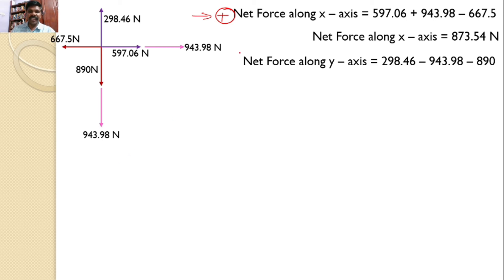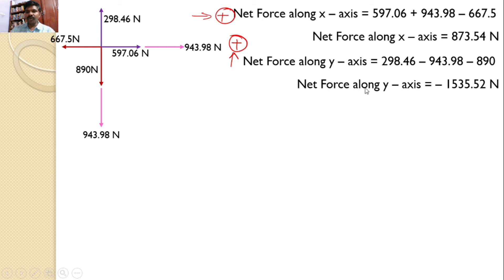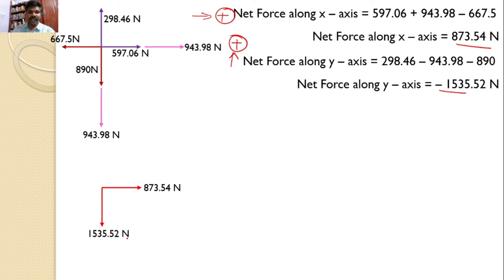Similarly, for the net force along the Y axis, taking upward as positive: 943.98 Newtons acts downwards, 819 Newtons acts downwards, and 298.46 Newtons acts upwards. Hence, the net force along the Y axis equals 298.46 − 943.98 − 890, giving −1535.52 Newtons. The negative sign means the net force is acting in the downward direction. So the net force is 873.54 Newtons to the right and 1535.52 Newtons downward.